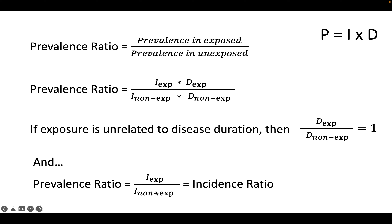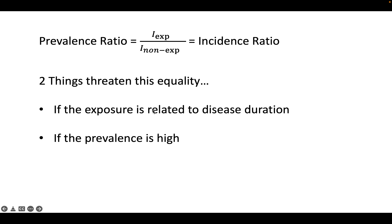Under that assumption, the prevalence ratio can be taken as an estimate of the incidence ratio, which is much more valuable for the reasons discussed. Two things threaten this equality: first, if exposure is related to disease duration — for example, exposed and diseased individuals die very quickly while unexposed and diseased individuals live several more years; and second, if the disease is very common. So the prevalence ratio can estimate the incidence ratio when the disease is rare and when the duration of the disease is unrelated to exposure.